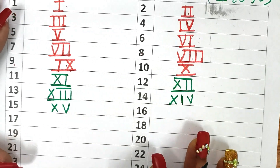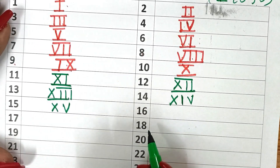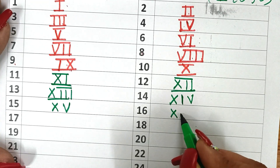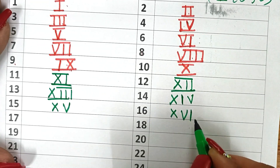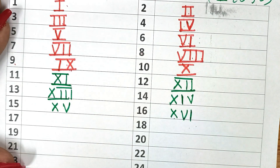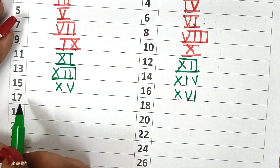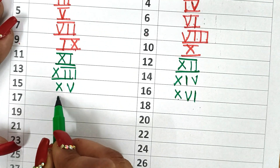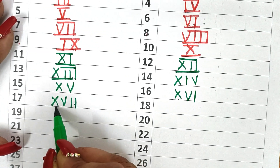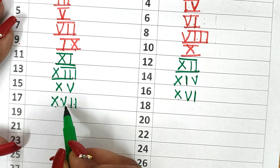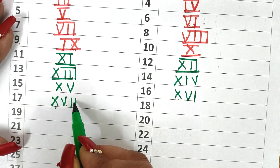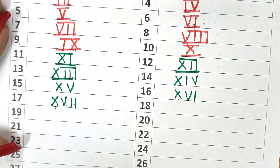16: how do you write 16? 10, 5, and 1 — XVI. Now 17: how do you write 17? 17 is 5, 6, 7 and this is 10. So 10 plus 7 is 17 — first I write 10 and then add 7 to it, giving XVII.